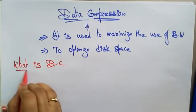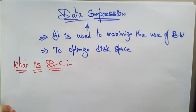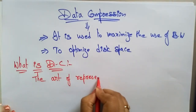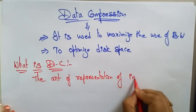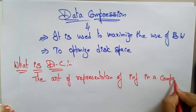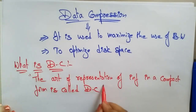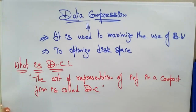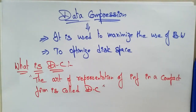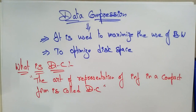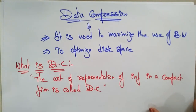Let me write: DC — data compression. The definition of data compression is the art of representation of information in a compact form. Representing information in a small, compact form is called data compression. These representations are created by identifying and using the structures in the data.